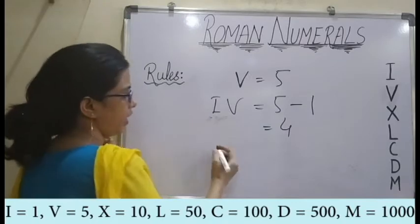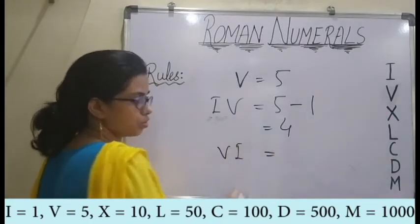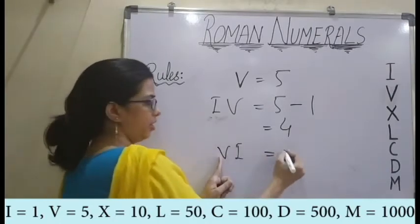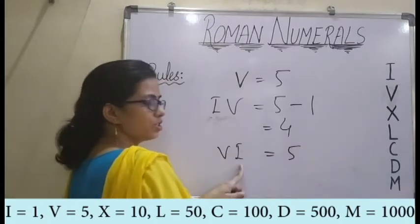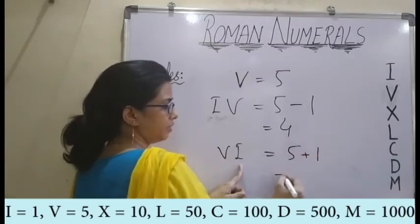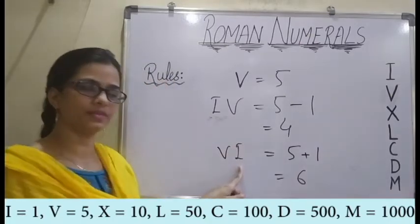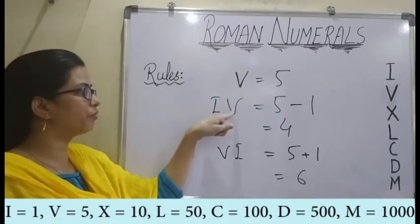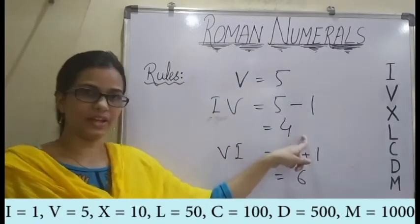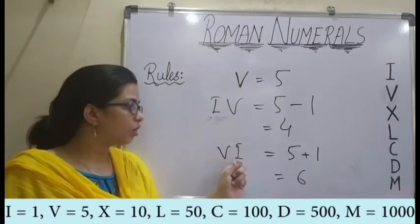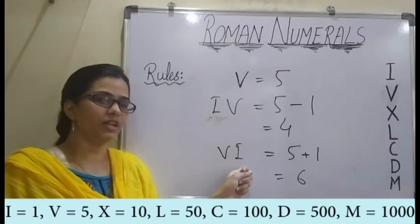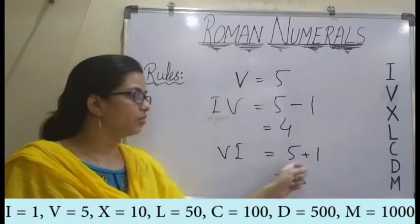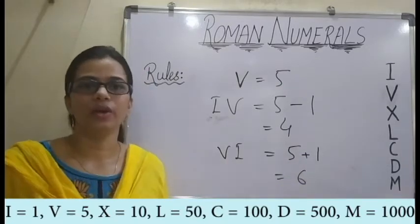Similarly, if I write VI, what will I get? Here it means the value of I is added to the value of V. Value of V is 5 and value of I is 1. So we add the two and get 6. The rule says: if a smaller value symbol is written before a greater value symbol, its value is subtracted. And if a smaller value symbol is written after a bigger value symbol, the values are added.